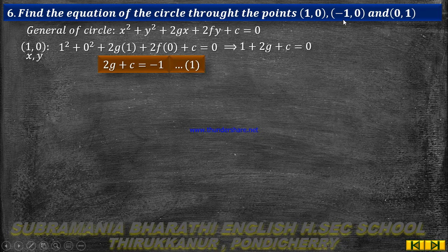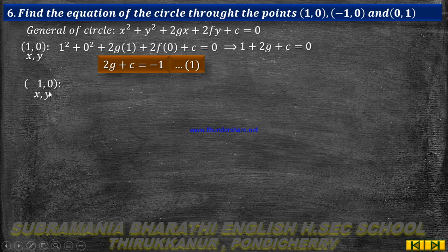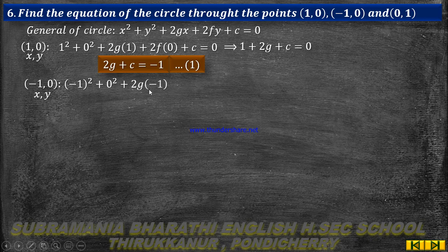Second point is (-1, 0): x equal to minus 1, y equal to 0. Substituting: minus 1 the whole square plus 0 squared plus 2g into minus 1 plus 2f into 0 plus c equal to 0.